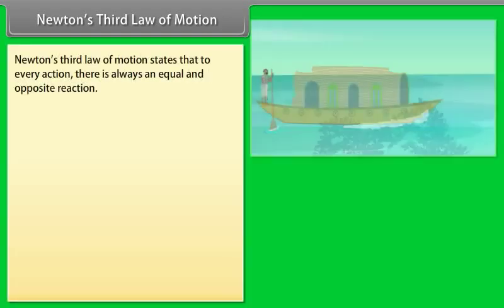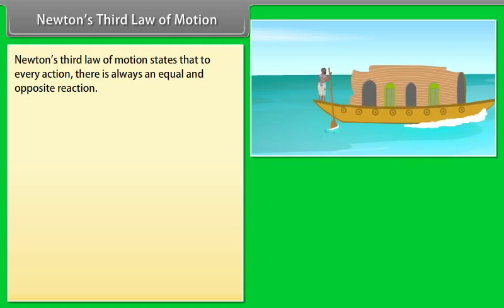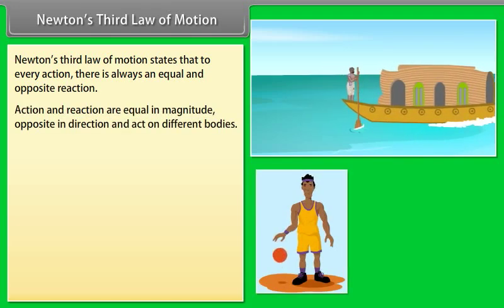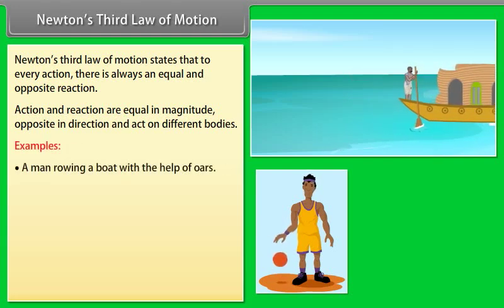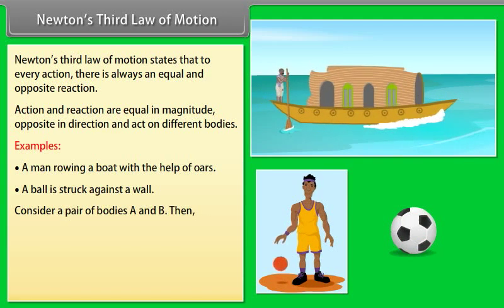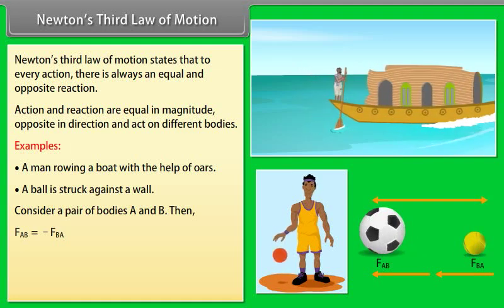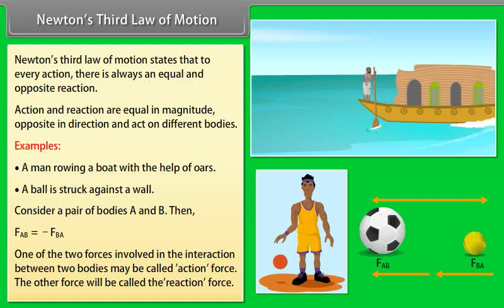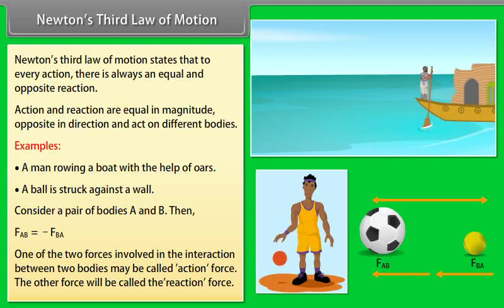Newton's third law of motion states that to every action there is always an equal and opposite reaction. Action and reaction are equal in magnitude, opposite in direction, and act on different bodies. A man rowing a boat with oars and a ball bouncing on the ground are examples of Newton's third law. For a pair of bodies A and B: F_AB = −F_BA. One of the two forces may be called the action force and the other the reaction force.